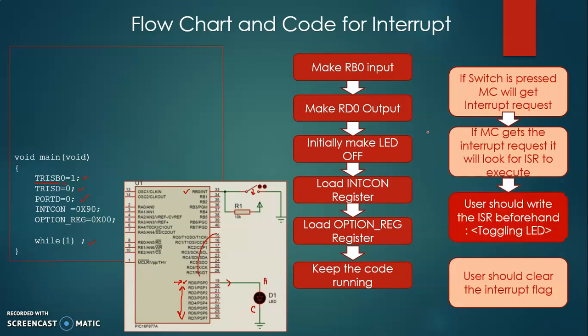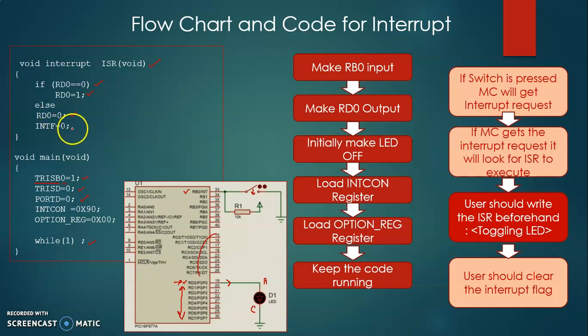The ISR code must be written by the user beforehand. Inside the ISR we want to toggle the LED on RD0. We write: if RD0 == 0, then set RD0 = 1, else set RD0 = 0. This means if the LED is off, turn it on; if it is on, turn it off. One very important point — you must clear the interrupt flag by writing INTF = 0. With that, the ISR is complete.